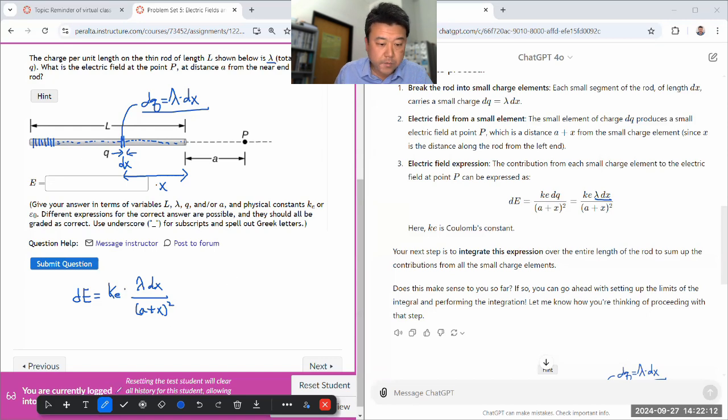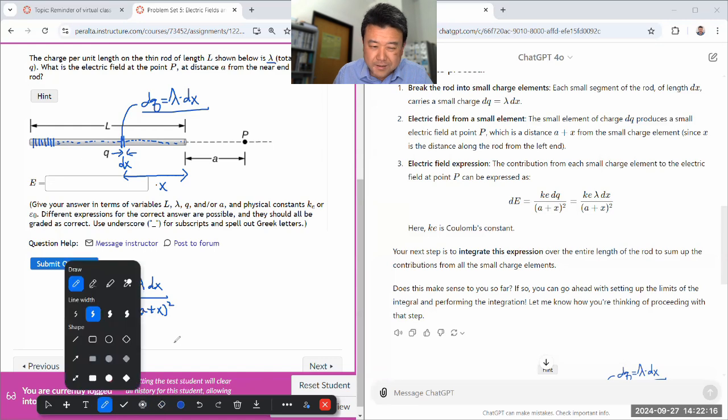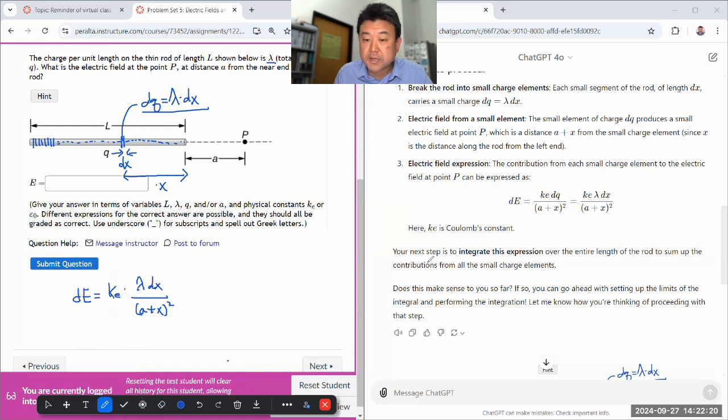Your next step is to integrate this expression over the entire length. So that goes from X equals zero to X equals L. And is this integral something that I should be able to do easily? I could use U substitution for this. I'll say I have this integral set up and I need some help with the integration formula.